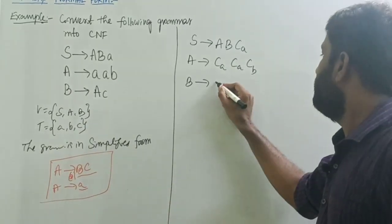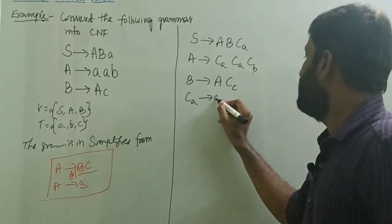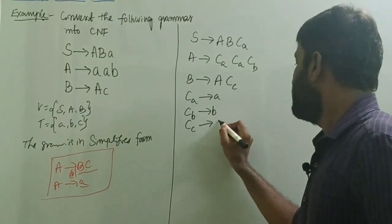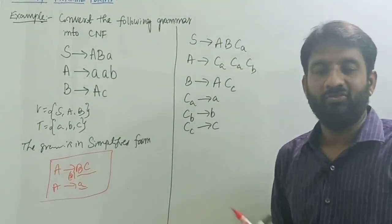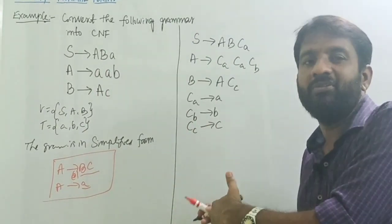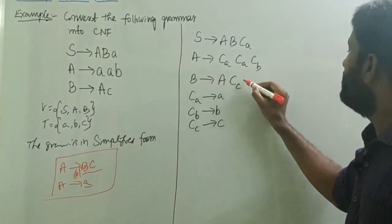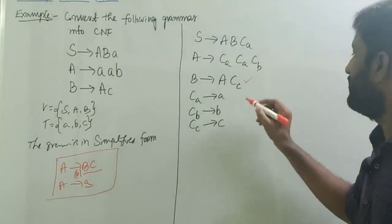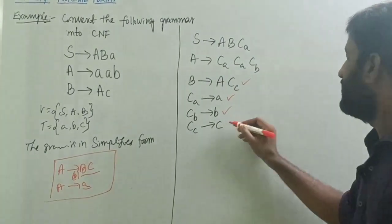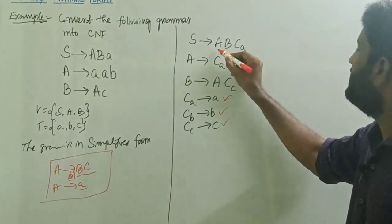B tends to A CC. Now Ca tends to a, Cb tends to b, Cc tends to c — converting terminals into non-terminals so we can reduce to exactly two non-terminals. Observe: B tends to A CC is not yet in CNF; Ca tends to a is in CNF; Cb tends to b is in CNF; Cc tends to c is in CNF.